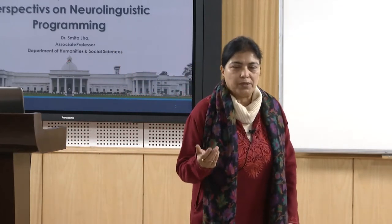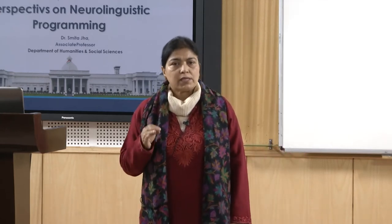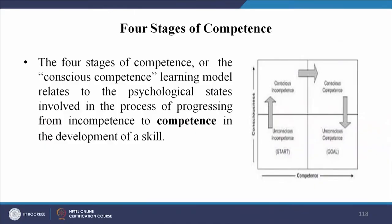What are the 4 stages of competence? The 4 stages of competence, or the conscious competence learning model, relates to the psychological states involved in the process of progressing from incompetence to competence in the development of a skill. This is a psychological state of mind — how you move from incompetence to competence, and if your incompetence level is high, how to decrease it to increase your competence level.